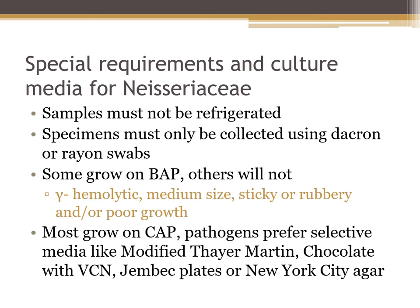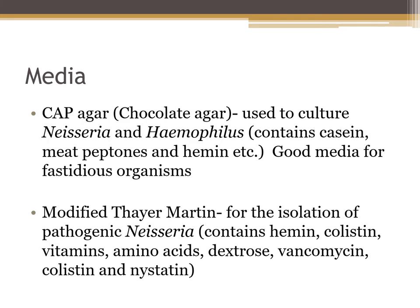On blood agar, these organisms are gamma hemolytic, medium-sized, can be sticky or rubbery, and may show poor growth. Most Neisseria species do grow on chocolate agar. The pathogens prefer selective media like modified Thayer Martin, chocolate with VCN (vancomycin, colistin, and nystatin), Jembec plates, or New York City agar. These media are enriched with high amounts of dextrose and horse hemoglobin, which suppress gram-positive cocci, yeast, and other gram-negative organisms. The optimal media for growing Neisseria pathogens is chocolate agar.